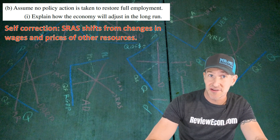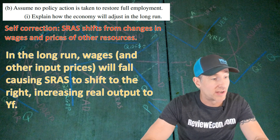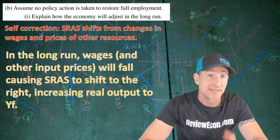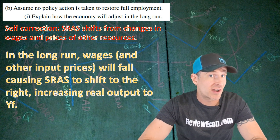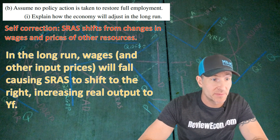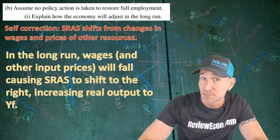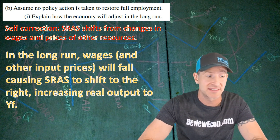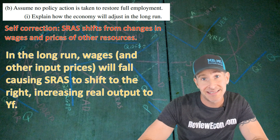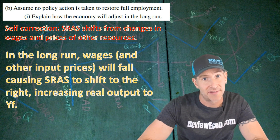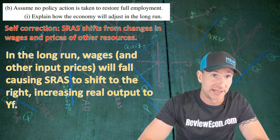Since we have a recessionary gap, the answer is that in the long run, wages and other resource prices will fall. That will cause the short-run aggregate supply curve to shift to the right as a result of lower input costs for businesses, and that increases real GDP output until it is equal to YF. If you have an answer like that, you're going to get yourself a point.